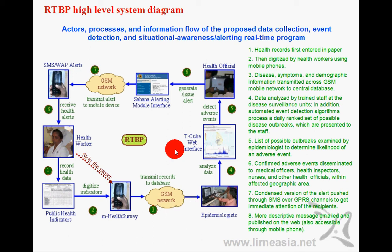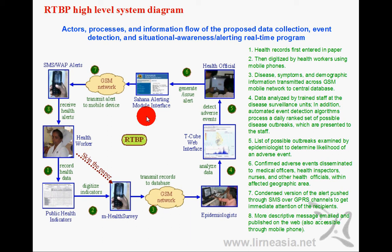The demographic, disease symptom, and location information pertaining to a patient's health record is transmitted to a database, whereby epidemiologists can analyze this data to find unusual patterns using the TQ web interface developed by Carnegie Mellon University — a visualization and statistical estimation tool. When an event is detected and verified, we use the Sahana alerting module to transmit situational awareness or alert reports back to health workers through the GSM network onto mobile phones in the form of SMS, email, and text.